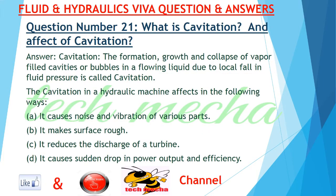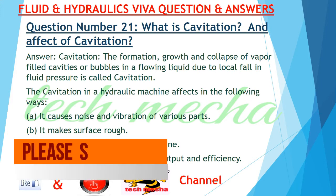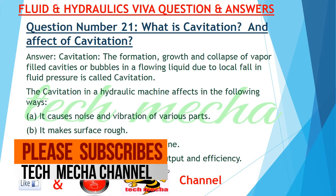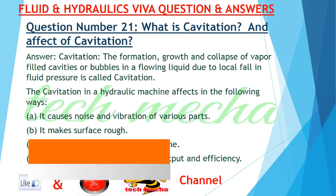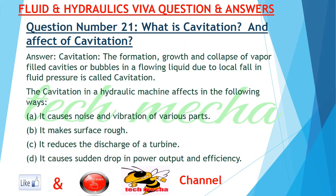Question number 21: What is cavitation and the effects of cavitation? Answer: Cavitation is the formation, growth, and collapse of vapor-filled cavities or bubbles in a flowing liquid due to a local fall in fluid pressure. Cavitation in a hydraulic machine affects it in the following ways: it causes noise and vibration of various parts, it makes surfaces rough, it reduces the discharge of a turbine, and it causes sudden drop in power output and efficiency.